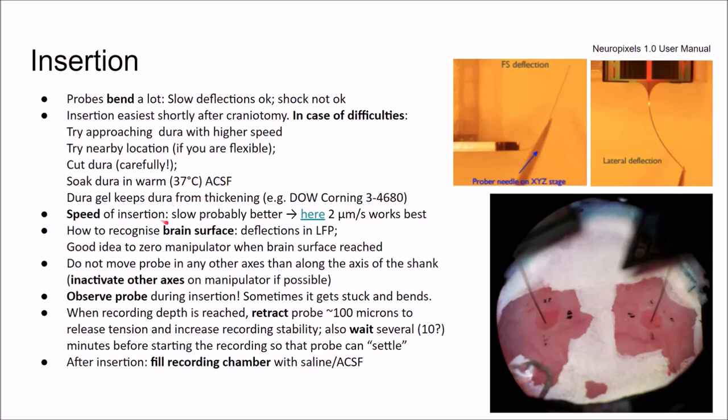Speed of insertion. This is kind of a matter of philosophy, or it was in our lab for a long time. We think slow is probably better. But here's now a paper that tried many different speeds. And it seems that the slowest speed they tried, so two microns per second, works best in terms of keeping most of the neurons after you inserted the probe.